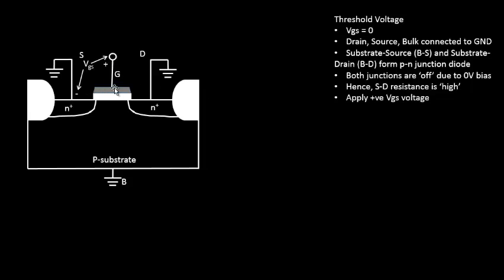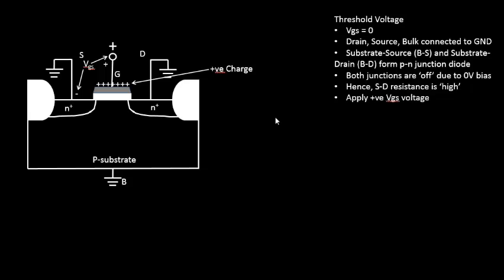Now we will apply a positive gate voltage — one plate of the capacitor is connected to a positive voltage source. This positive voltage applied to the polysilicon gate plate means that plate becomes positively charged. Just like a magnet repels like charges and attracts opposite charges, a similar behavior will happen here. The positive plate will repel positive charges in its vicinity.